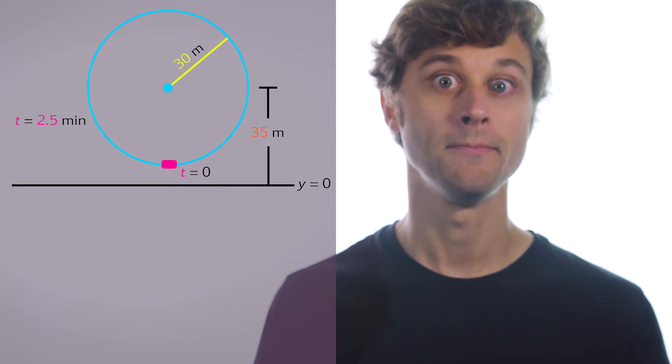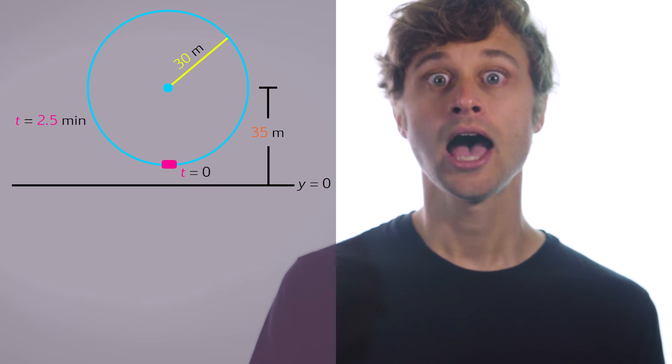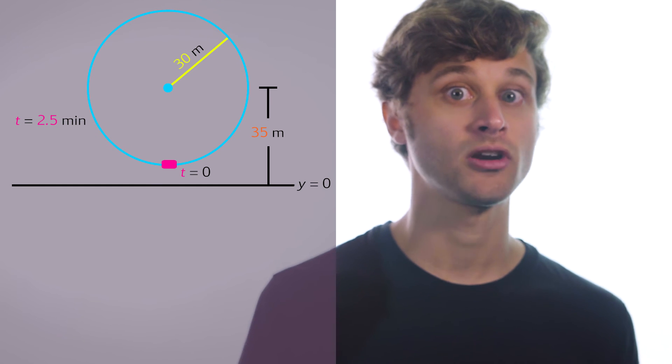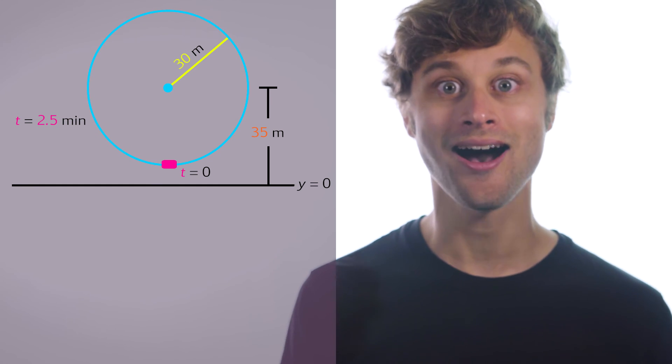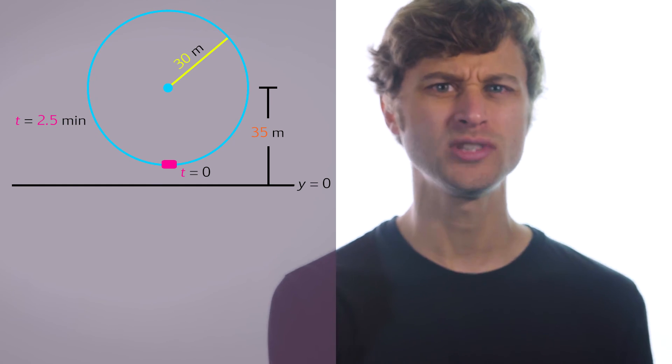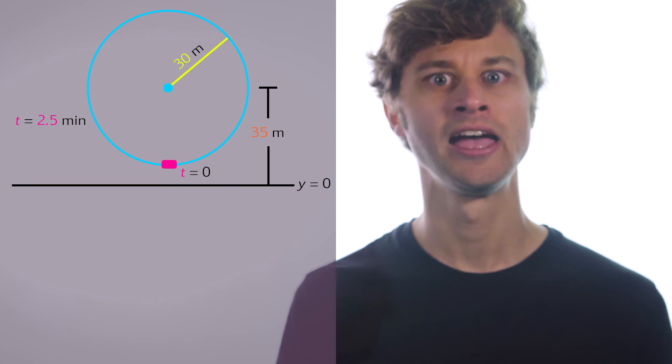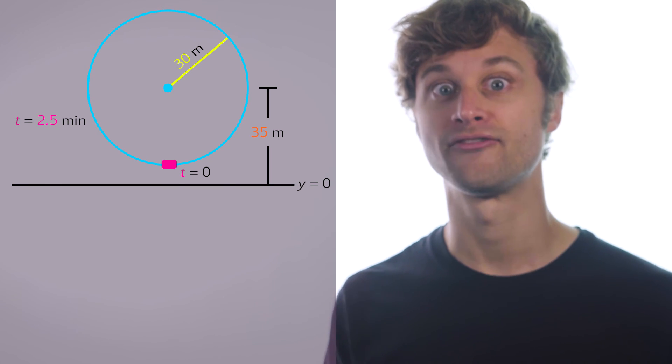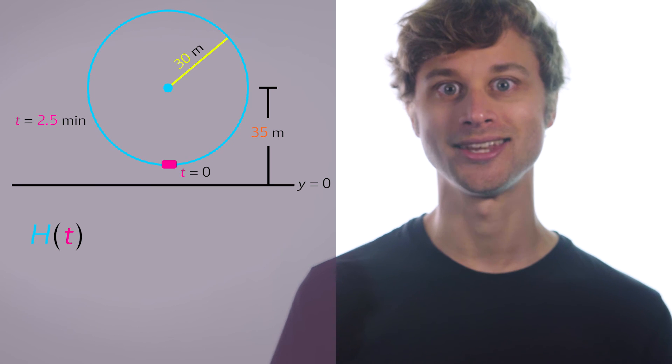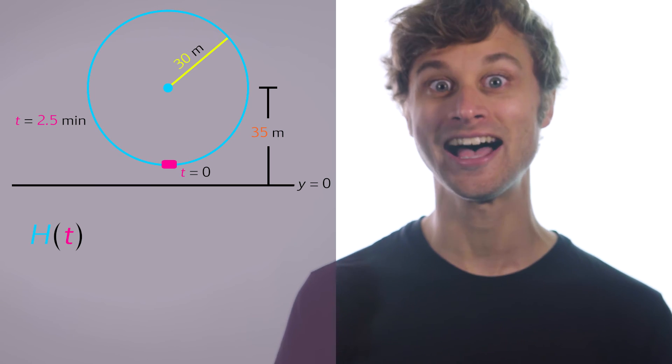So due to the cyclical nature of this problem, using a trigonometric function makes sense. Before we begin, I'm going to use t as my independent variable here because we are using time in this problem. We could use x, but I think it's more convenient to use time. And also I'm going to call my function capital H of t because again we're solving for height.